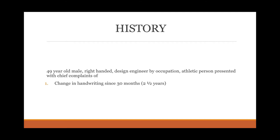In dystonia, as the patient writes, the handwriting changes. Initially he'll have normal writing and then later it changes as he writes. In focal dystonia, as the person is writing, he keeps pressing on the paper. If you give him a hollow-nib pen, the nib will break, and you can see the muscles of the forearm going into spasm. He presses so tight that the hand will rise.